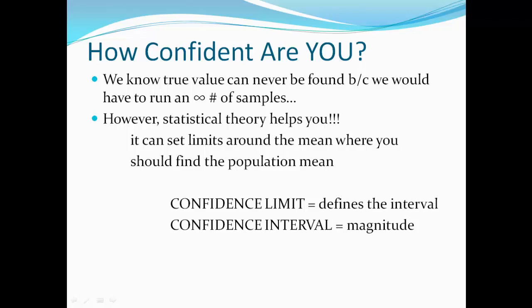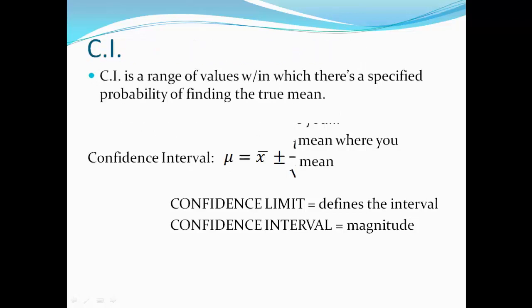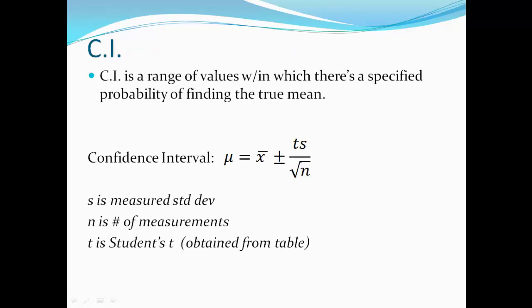It gives you the range of values within which there is a specified probability of finding your true population mean. Here I'm showing you the definition. CI is a range of values within which there is a specified probability of finding the true average. The equation for confidence interval is shown right here. That's mu, which is the population mean, equals the average plus or minus TS over the square root of N.